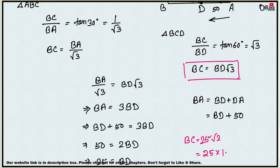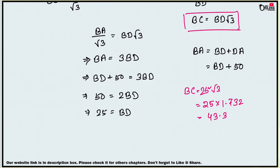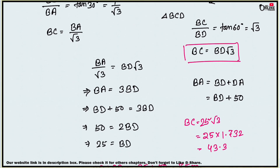So BC equals 25 root 3, which is 25 times 1.732, giving 43.3 meters — that is the height of the tower. Now for the distance of the tower from A: BD plus AD equals 25 plus 50, which equals 75 meters. So the second answer is 75 meters.